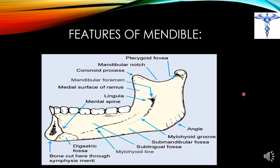Here you can see one half of the mandible. The two halves of the mandible are attached through the symphysis menti, which is a faint ridge indicating where the two halves meet. At the side of the symphysis menti is the digastric fossa, which is for the attachment of the bellies of the digastric muscle. Above the digastric fossa is the mental spine, which is for the attachment of two muscles: the genioglossus muscle above and the geniohyoid muscle below.